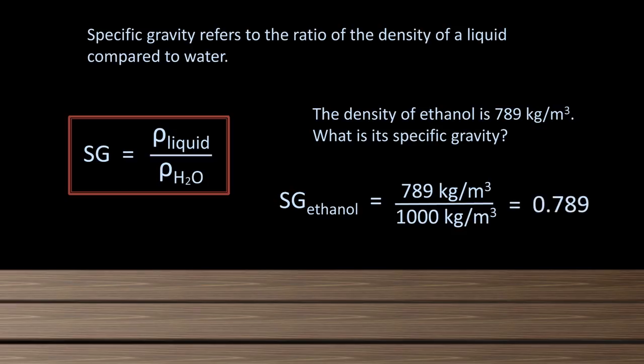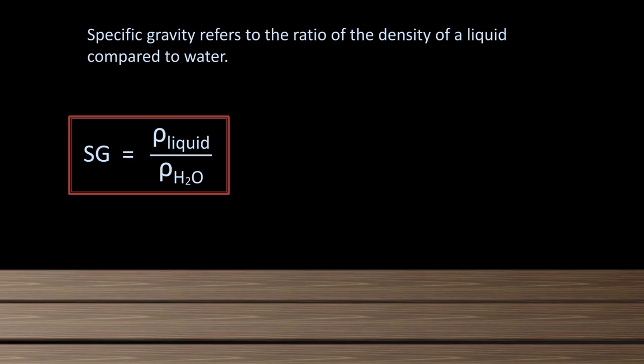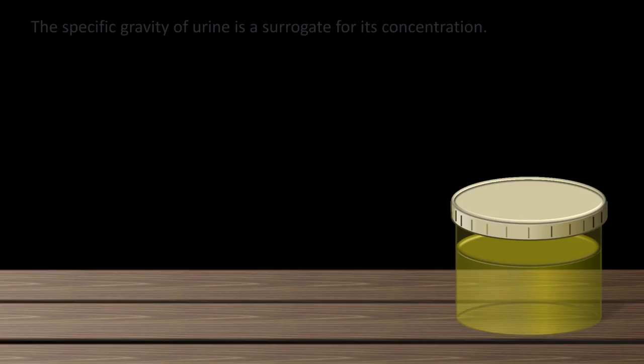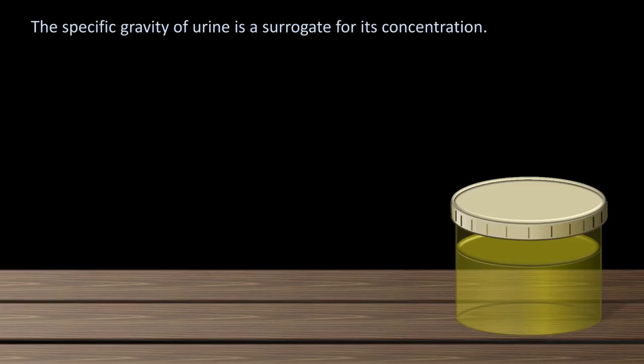It's so simple it seems silly for someone to have bothered defining the concept. One important aspect of specific gravity, however, is that liquids with a specific gravity less than 1 float above water, and those with a specific gravity greater than 1 sink beneath water. How is this used in medicine? Let's take a urine sample from a patient. The specific gravity of urine is a measure of its concentration, or more accurately, a surrogate for its concentration.